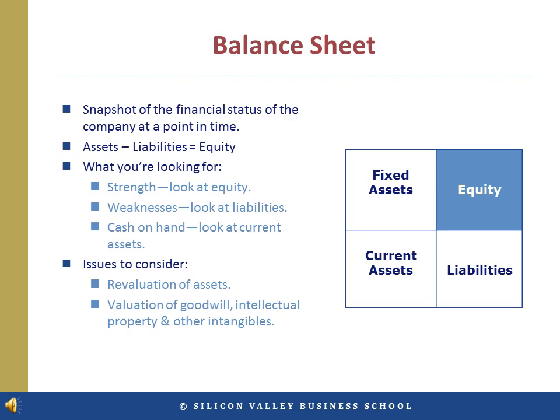The other way of looking at this is an equation: assets equals liabilities plus equity, or more realistically, assets less liabilities equals equity. Equity is one of the key things you are looking for in a balance sheet as it determines the solvency of the company.